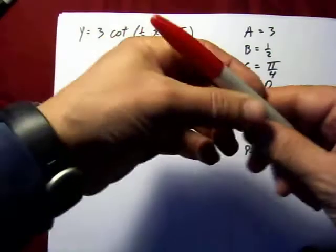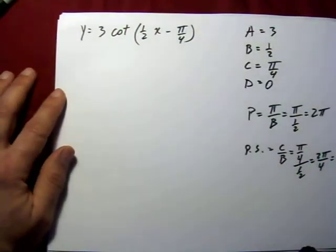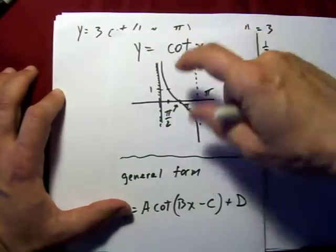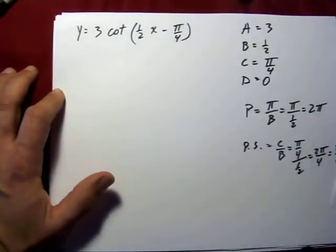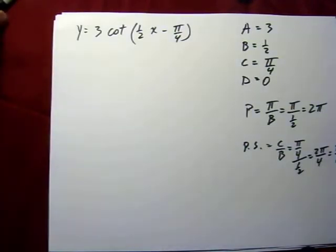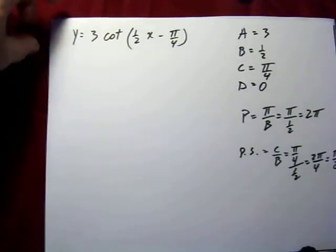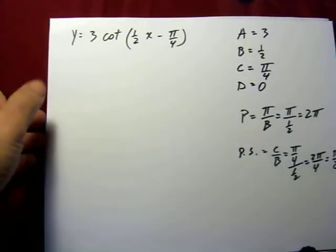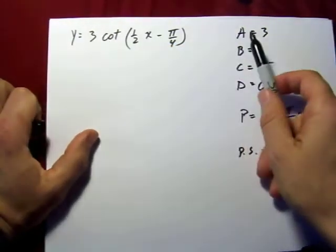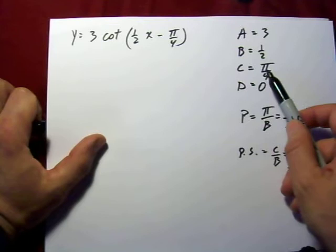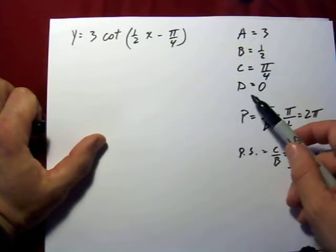Now, again, D I'm leaving off because all that does is shift the graph up or down once it's drawn. So that's really almost trivial. So here's my new example. Let's identify what my values are: A is 3, B is 1/2, C is positive π/4, and D, of course, is 0.